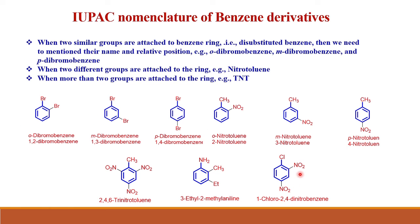When two similar groups are attached to the benzene ring, that is a disubstituted benzene, we need to mention their names and relative positions. For example, if there are two bromine substituents, we call it dibromobenzene. The relative position can be ortho (1,2), so it is ortho-dibromobenzene or 1,2-dibromobenzene. If the substituent is at position 3, it is meta-dibromobenzene or 1,3-dibromobenzene. At position 4, it is para-dibromobenzene or 1,4-dibromobenzene.